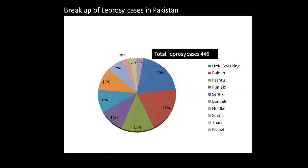Ethnic distribution — this is only for academic purposes and has nothing to do with ethnicity — statistics show it is common in 20% of Urdu-speaking population, 20% in Baloch, 13% in Pashtuns, 10% in Punjabis, Saraiki and Hindko speakers, then in Bengalis, then 7% in Hindko, 3% in Sindhis, and 3% in Tharvi and Brahui.